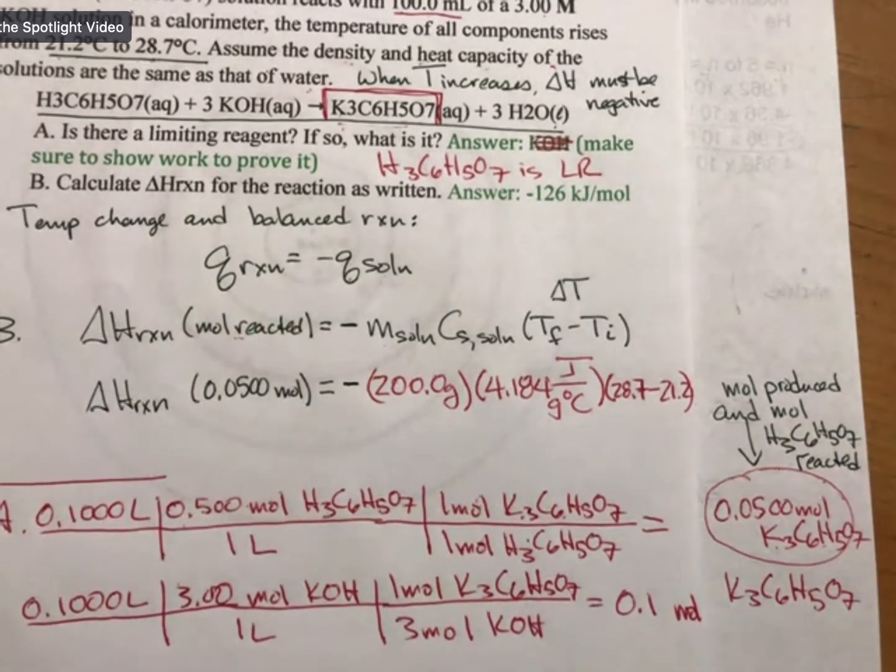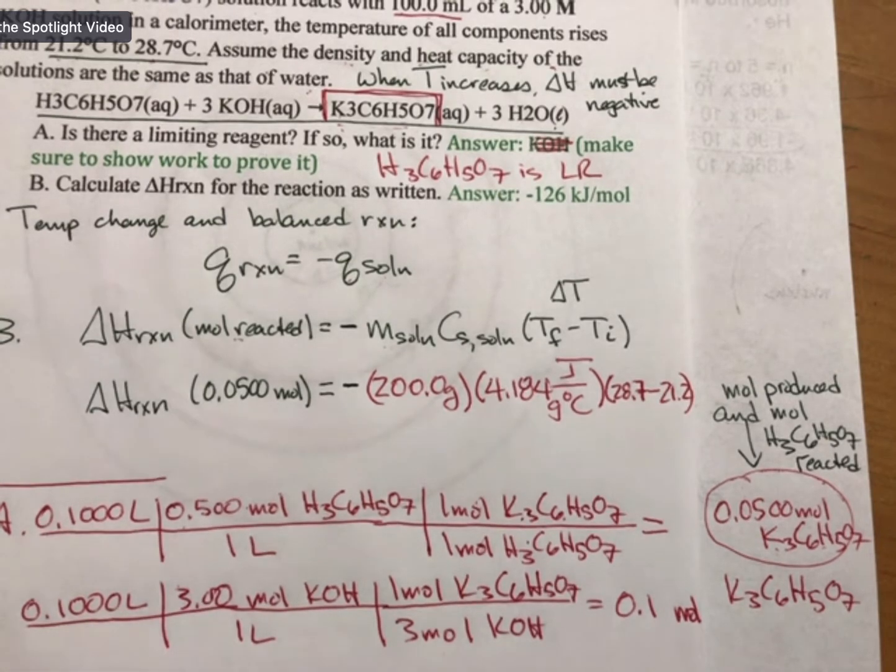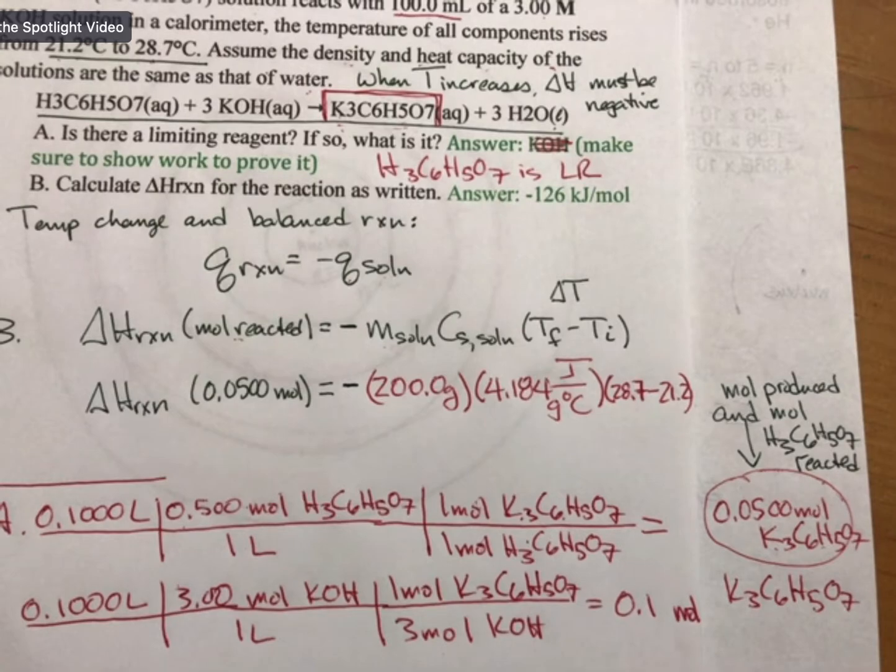And the only thing we don't know in this equation is delta H reaction, and so we're actually very close to the answer to this problem. Can somebody work it out and verify that either you got minus 126 kilojoules per mole, or you did not? Yeah, that's correct. Awesome.